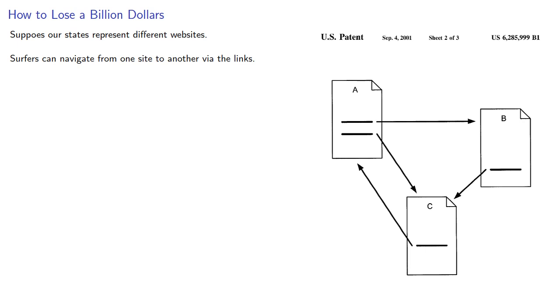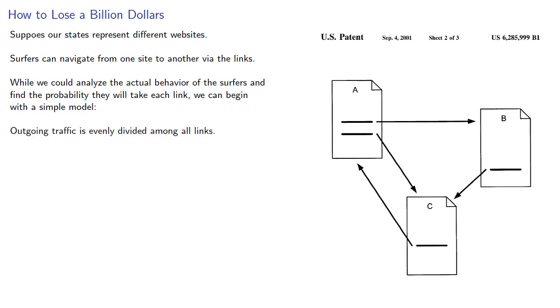And now what we've all been waiting for. How to lose a billion dollars. Suppose our states represent different websites. Surfers can navigate from one site to another via the links. While we could analyze the actual behavior of the surfers and find the probability they will take each link, we can begin with a simple model.